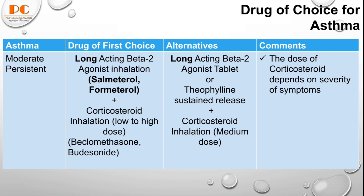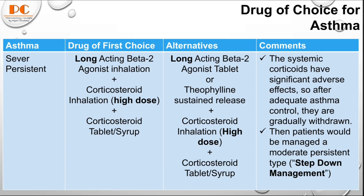For severe persistent asthma, we can use a long-acting beta-2 agonist by inhalation route with inhaled corticosteroid at a high dose, along with corticosteroid tablet or syrup. The alternative includes long-acting beta-2 agonist tablets or theophylline sustained release with high-dose inhaled corticosteroid plus systemic corticosteroid. After adequate asthma control, systemic corticosteroids are gradually withdrawn — this is called step-down management.